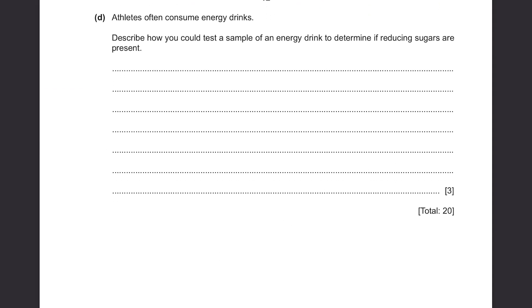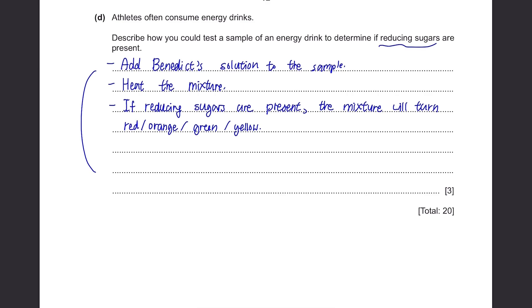Part D: Athletes often consume energy drinks. Describe how you could test a sample of an energy drink to determine if reducing sugars are present. This is a simple question, even if there are lots of space given here. Well, how do we test for the presence of reducing sugars? We use Benedict's solution. So add Benedict's solution to the sample and heat the mixture. If the reducing sugars are present, you'll see a color change. It can be red, orange, green or yellow depending on the concentration of the reducing sugars.